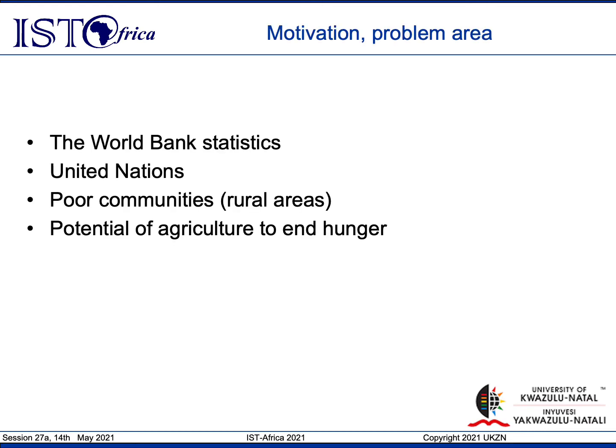The World Bank World Development Report states that three out of every four people living in developing countries rely directly or indirectly on agriculture for their livelihoods. The United Nations also places focus on the smallholder farmer who is responsible for feeding the majority of poor communities in developing countries. It is these poor communities that are most highly affected by the challenges of hunger, and therefore agriculture has got a huge potential in aiding to solve the problem of hunger. It is this area that the study seeks to contribute towards, looking at how exactly technology can impact the agricultural process of smallholder farmers.